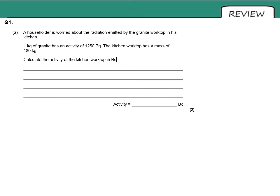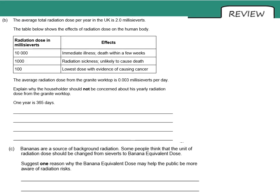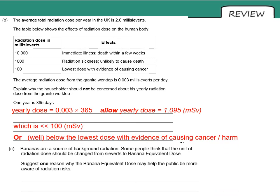In the apply and demonstrate questions: to calculate activity, we multiply the amount per kilogram by the mass of the kitchen worktop, giving 225,000 becquerels of activity. This question compares perceived risk with actual risk. The householder should not be worried because the yearly dose would be 1.095 millisieverts (0.003 × 365), which is well below 100 millisieverts — the lowest dose shown in the table as having evidence of causing cancer.